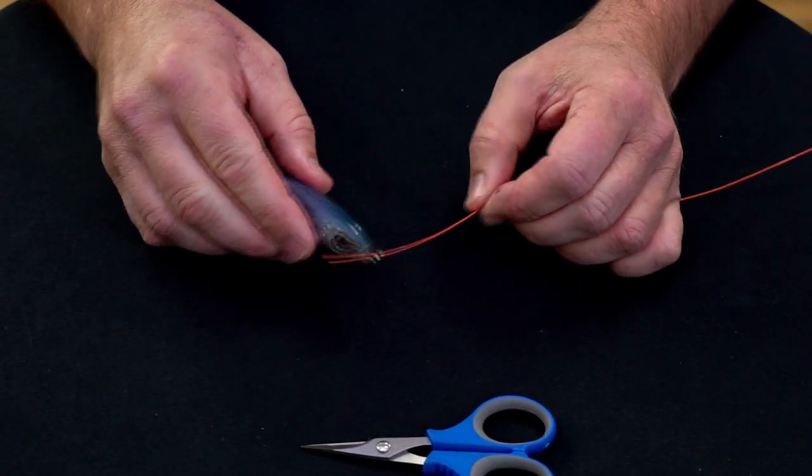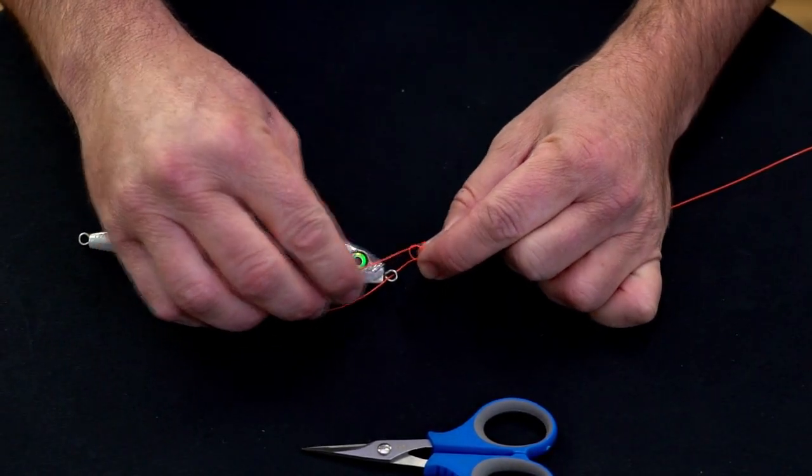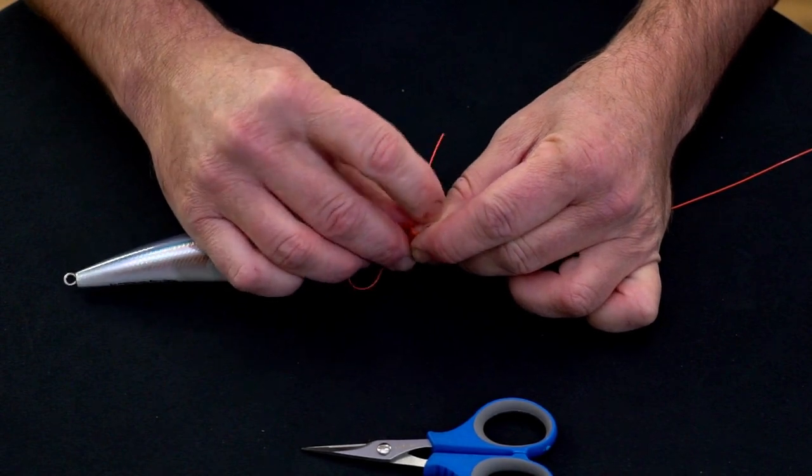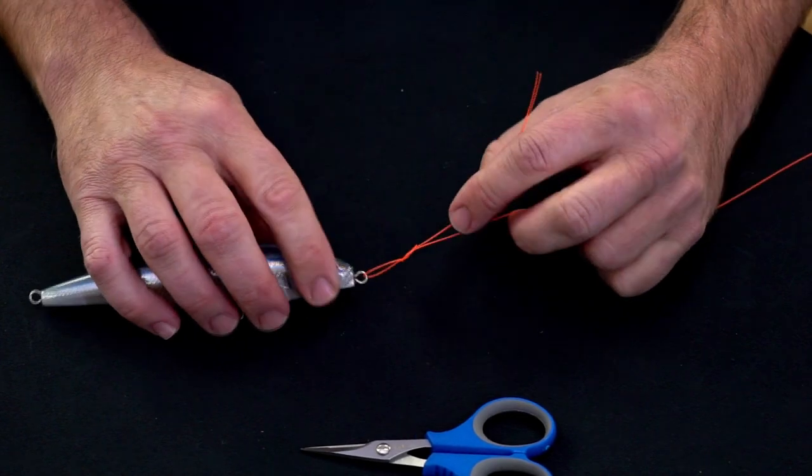Then we put our line through the eye of the lure, and then our tag goes through that granny knot twice. So there's one, and then a second time. That is the majority of the knot. Look at that.